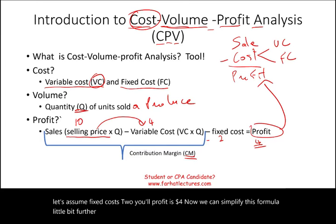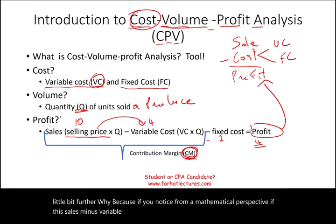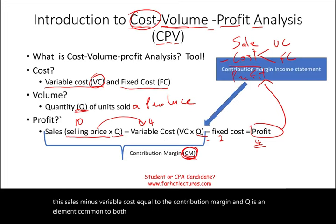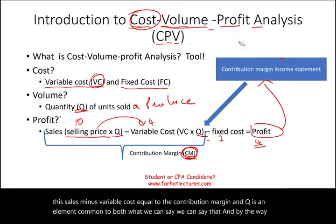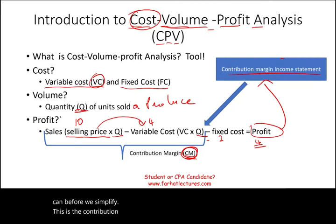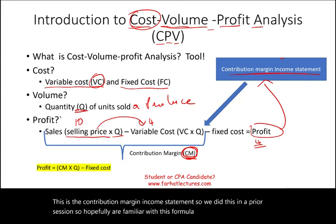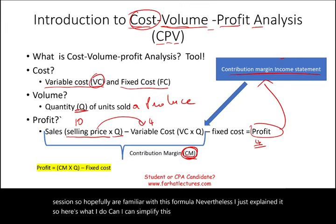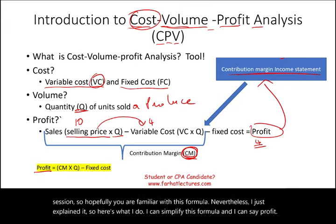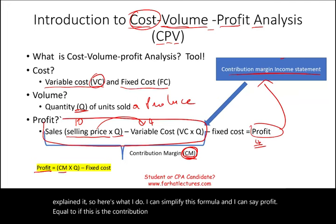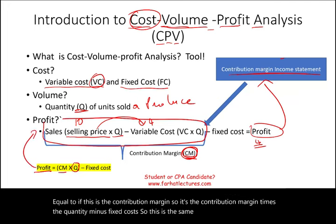We can simplify the formula further. Since Q is a common element to both sales and variable cost, the contribution margin income statement simplifies to: Profit = (Contribution Margin per unit × Quantity) − Fixed Cost. This is the same formula, just simplified. Jot this down — I'll show you how to solve problems with it shortly.